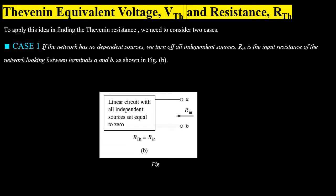In finding Thevenin resistance we have two cases. Case 1 is when the network consists of only independent sources with no dependent source present. In this case we turn off all independent sources and the input resistance between the terminals from which the load has been removed will be the Thevenin resistance.